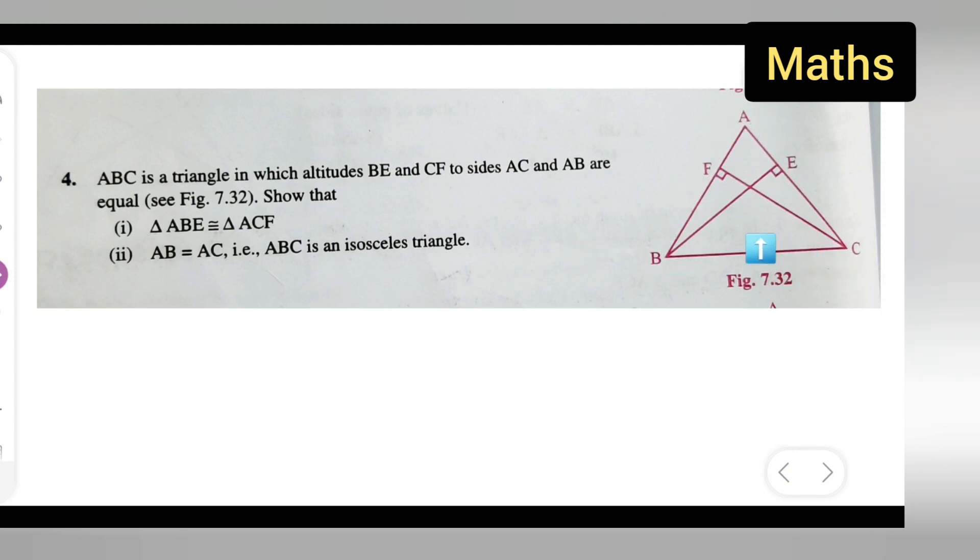And then secondly, you'll have to show that AB is equal to AC. That is, ABC is an isosceles triangle.